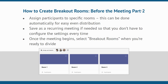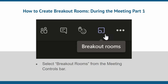Alternatively, you can also choose to automatically and evenly distribute your participants based on the number of breakout rooms created. If you plan on using the same breakout room settings in future meetings, save your meeting as a recurring meeting. Once your meeting begins, select the breakout rooms feature when you're ready to divide participants into smaller sessions.